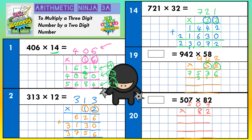Scribble out your carried digits because we don't need them again. Now let's do the second line to deal with the 5 — the 5 doesn't mean 5, it means 50. So put your magic zero in and then just times by 5. 5 twos are 10 — put the 0 in, carry the 1. 5 fours are 20, plus the 1 is 21 — put the 1 in, carry the 2. 5 nines are 45, plus the 2 is 47. Scribble out your carried digits.